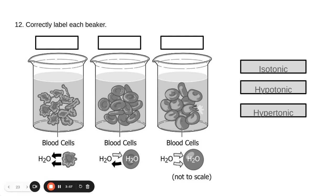Number 12 is an osmosis question. Correctly label each beaker. So we have three beakers here, and inside of each beaker we have red blood cells. And our job is to label them as isotonic, hypotonic, or hypertonic. So I think the easiest way I can help you out with this, three things.